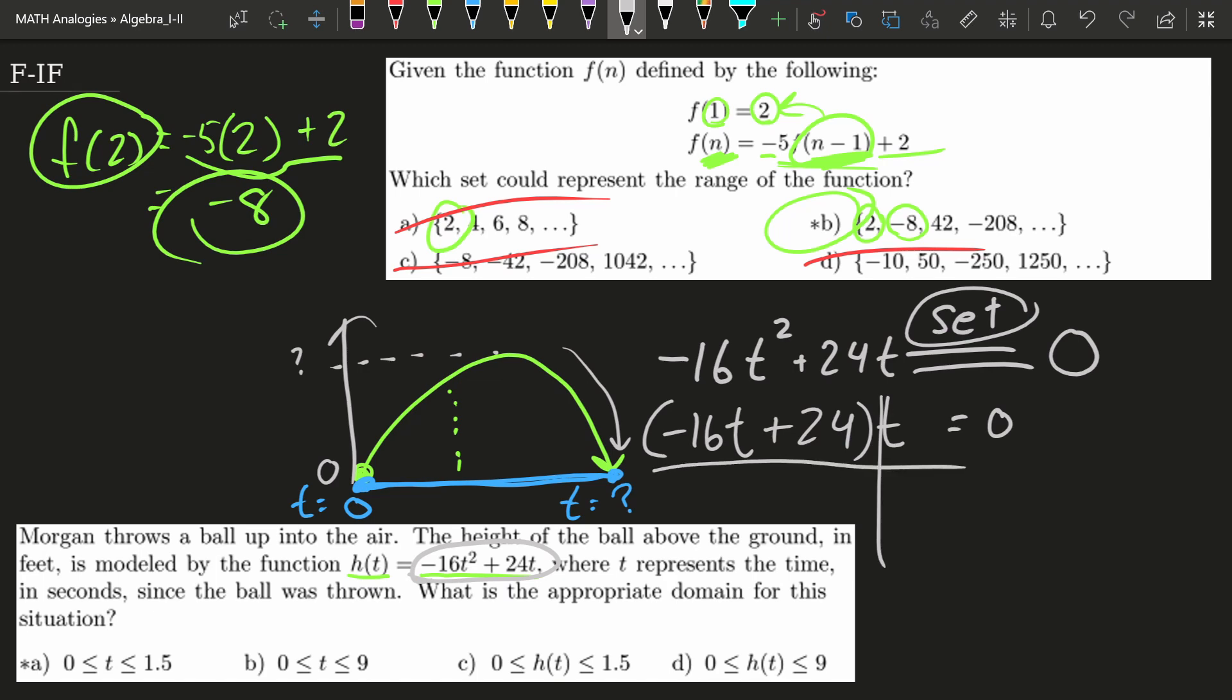So to make that 0, we could have the time being 0. Oh, we already knew that. We already knew that time equals 0 works. Or we could have this left hand piece being 0. So how do we get this left hand piece to be 0? Well, we would have 24 would be the same as positive 16t.